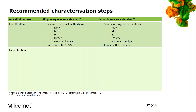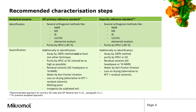Regarding quantification, the recommendations are different for primary reference standards and impurity reference standards. For impurity reference standards, the assay is usually assessed by the 100% method, requiring determination of purity, water content, and residual solvents content. The same is done for primary reference standards, but in that case it is additionally recommended to determine the assay by a second independent method, for example QNMR or titration. Furthermore, inorganic residues should be determined, for example by sulfated ash.